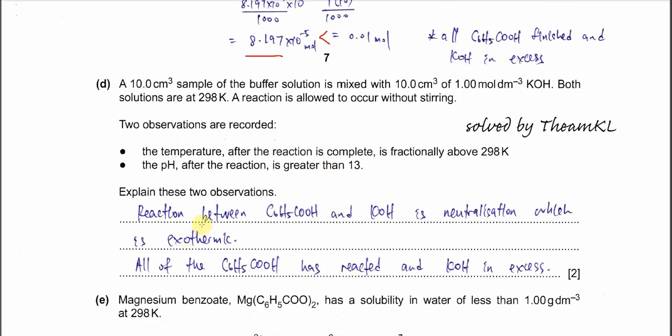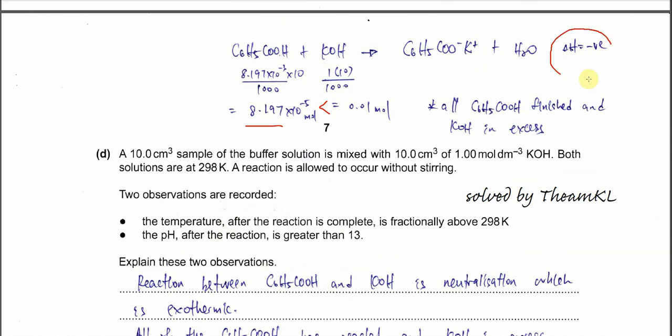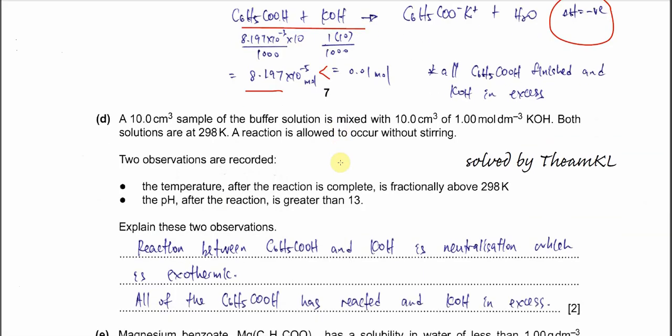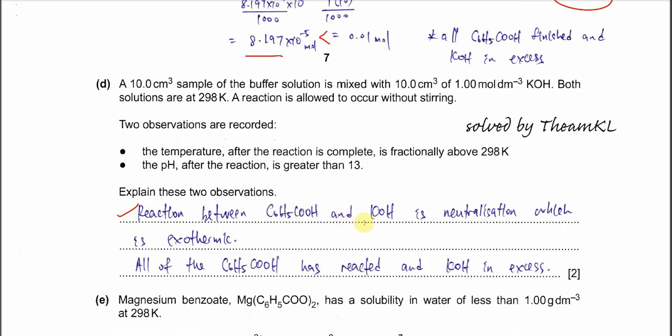Why is the temperature higher? Because it's exothermic, because it's a neutralization. So it's exothermic, releases heat, and therefore temperature is higher. So this is the first explanation: reaction between the acid and KOH is a neutralization which is exothermic and releases heat. And all the benzoic acid has reacted and the KOH is in excess after the reaction. That's why pH is more than 13.